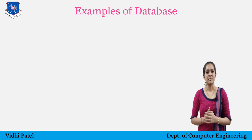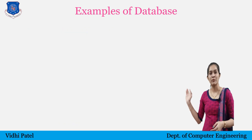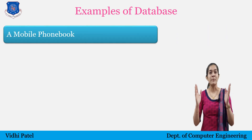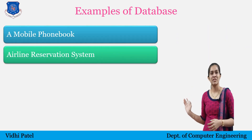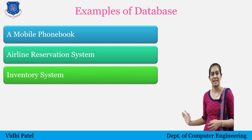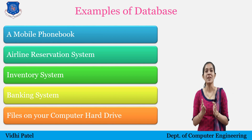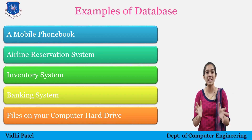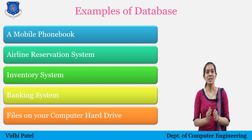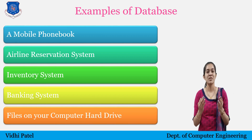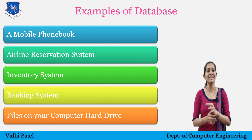There are some examples of databases you may encounter in daily life: a mobile phone book which stores many contacts, an airline reservation system, an inventory system, a banking system, and files saved on your computer hard drive. Your computer hard drive is a database that stores many files you use daily. All these mentioned systems use databases, and there are many more examples you can find in your daily routine.